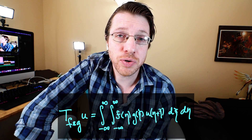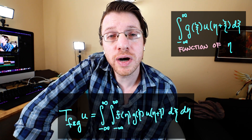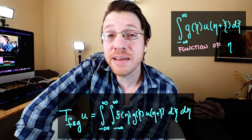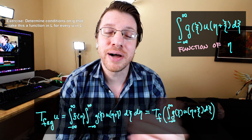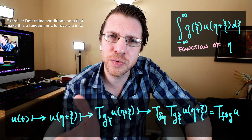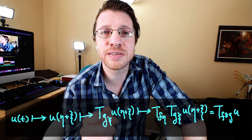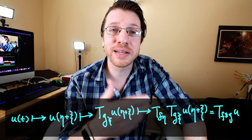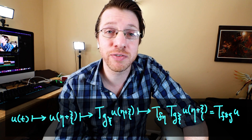We can take the integral from -∞ to ∞ of g(ξ) times u(η + ξ), and what we see is that this interior expression is a function of η. If that function is itself in L, we can think of applying f to it as a regular functional. Essentially, we've taken u and turned it into a function of two variables, treating it as a function in L for each individual variable separately. We first apply the regular distribution g, then apply the regular distribution f, each application corresponding to a different variable.